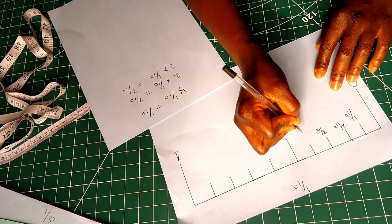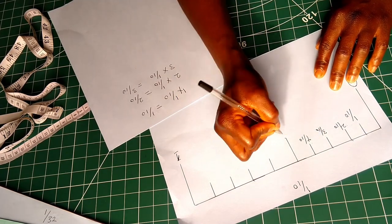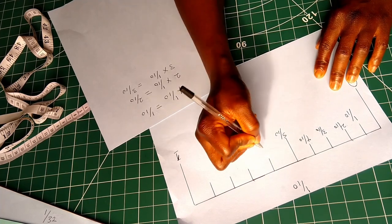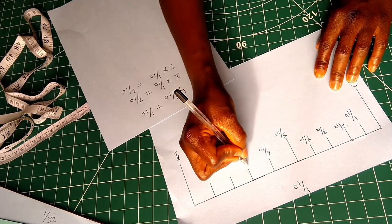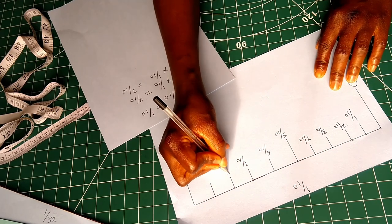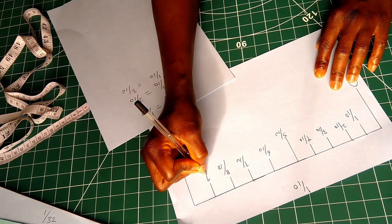So this is 3 over 10, 4 over 10, 5 over 10, 6 over 10, 7 over 10, 8 over 10, 9 over 10,